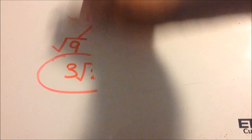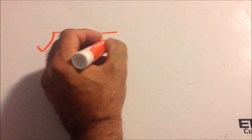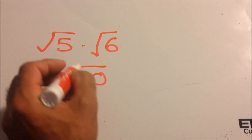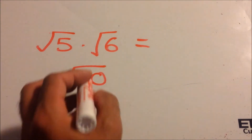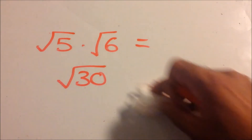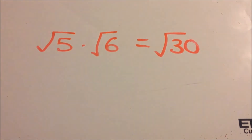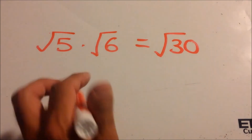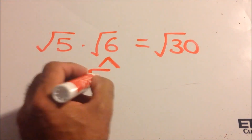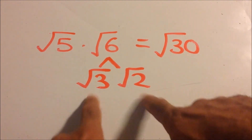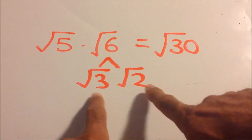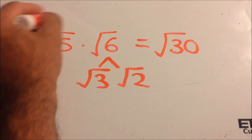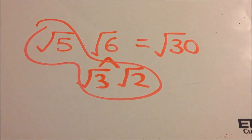If I ever give you on a test the square root of 5 times the square root of 6, we know that equals the square root of 30. But can we simplify it further? Can we break the square root of 30 down any further? No — there's no perfect square factor, so we leave it as the square root of 30. This is actually the same thing as just multiplying 5 and 6 under one radical. Great job.